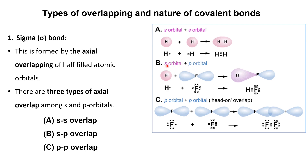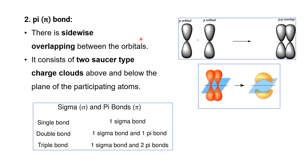SP overlap means overlapping between an s orbital and a p orbital. For example, in HF, the s orbital of hydrogen overlaps with the p orbital of fluorine to form the bond. The third type is PP overlap, where the p orbital of one atom overlaps head-on with the p orbital of a second atom. For example, in the fluorine molecule, two fluorine atoms come close and overlap head-on, leading to covalent bonding.